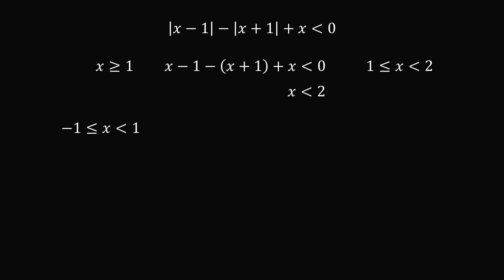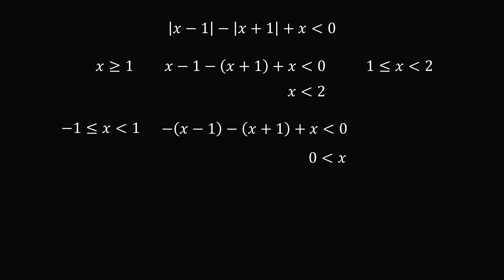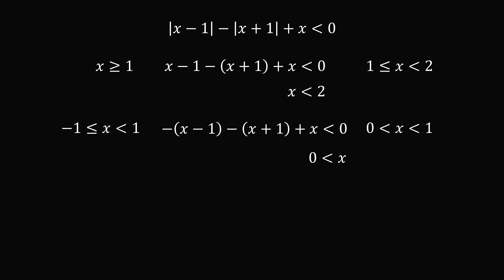The next case is when negative 1 is less than or equal to x is less than 1. In that case, x minus 1 is negative and x plus 1 is positive. So we have the opposite of x minus 1, minus the quantity x plus 1, plus x, is less than 0. Carefully working through the signs and grouping terms, we end up with 0 is less than x. Combining with the condition negative 1 ≤ x < 1, this works out to 0 is less than x is less than 1.